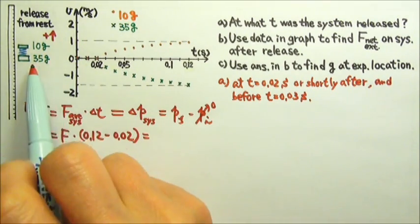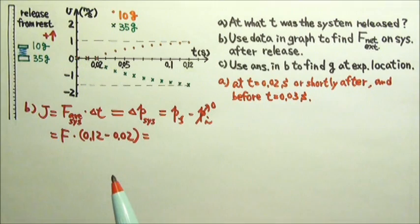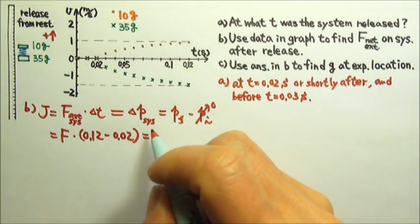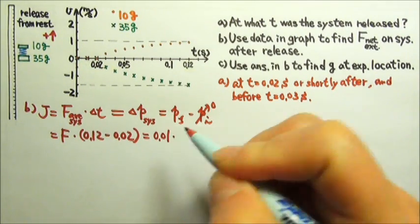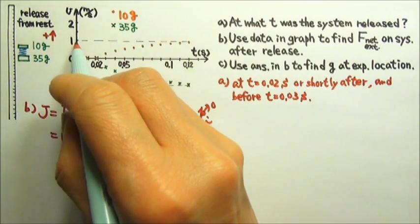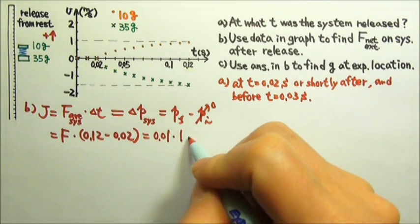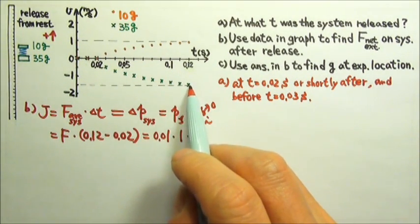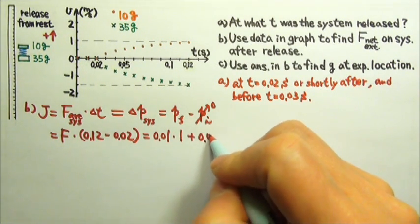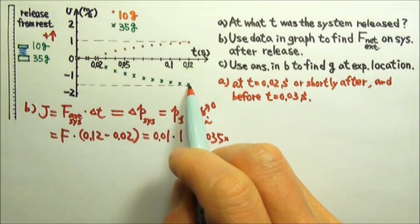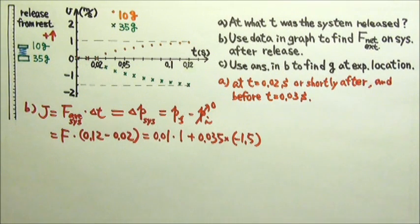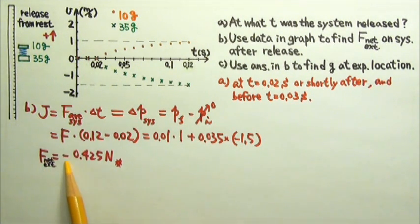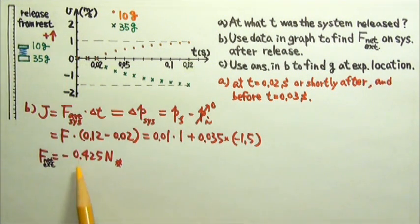After both blocks are moving, both blocks have momentum. The first block is 0.01 kilograms (10 grams) times the velocity at the end, which is 1 meter per second. The second block is 0.035 kilograms and has a velocity of negative 1.5 meters per second. So we can find the net external force to be negative 0.425 newtons. Negative means it is a downward force.